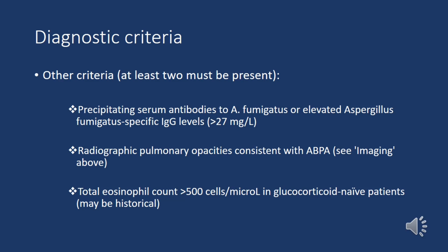In addition to predisposing and obligatory criteria, at least two of the following additional criteria are required: presence of precipitating serum antibodies to Aspergillus fumigatus or elevated aspergillus-specific IgG levels; radiographic pulmonary opacities consistent with ABPA; and a total eosinophil count greater than 500 cells per microliter in glucocorticoid-naive patients.